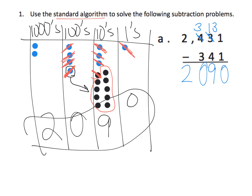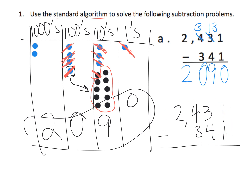Let me do that standard algorithm again, only this time uninterrupted — because initially I was bouncing back and forth between the place value chart and the standard algorithm, which might be confusing for students. So: 1 one take away 1 one gives us 0 ones. We have 3 tens take away 4 tens, which we cannot do, so we regroup one of these hundreds — leaving us with 3 hundreds — for 10 tens, meaning instead of 3 tens we now have 13 tens. 13 tens take away 4 tens leaves us with 9 tens. 3 hundreds take away 3 hundreds leaves 0 hundreds. 2 thousands take away no thousands leaves 2 thousands. Our answer is 2,090.